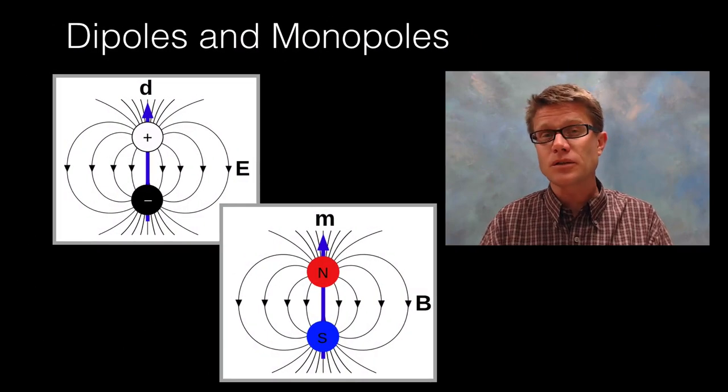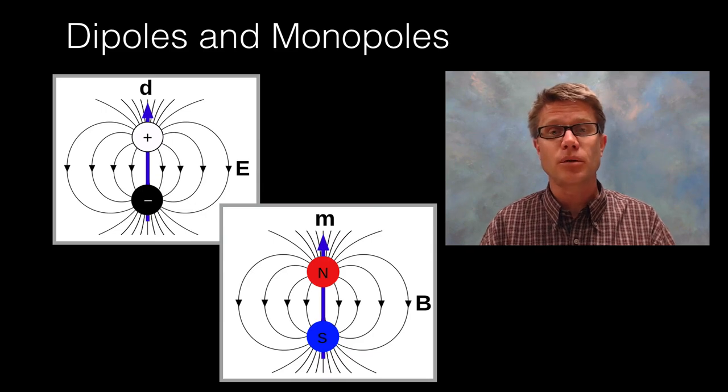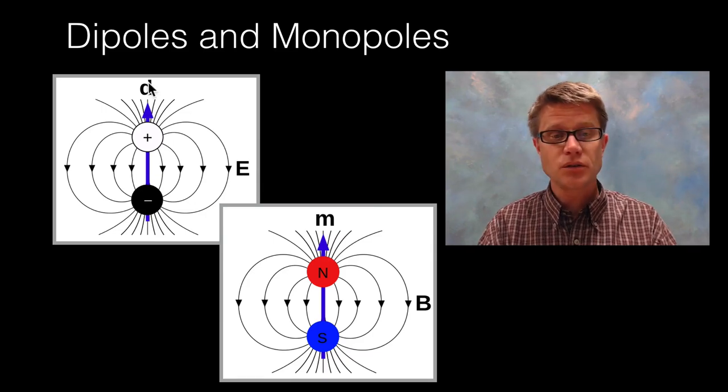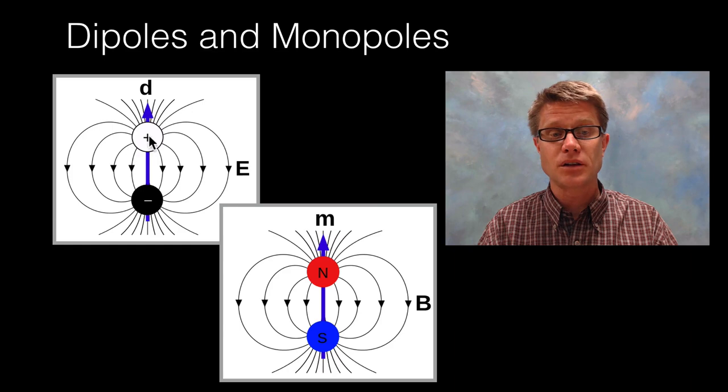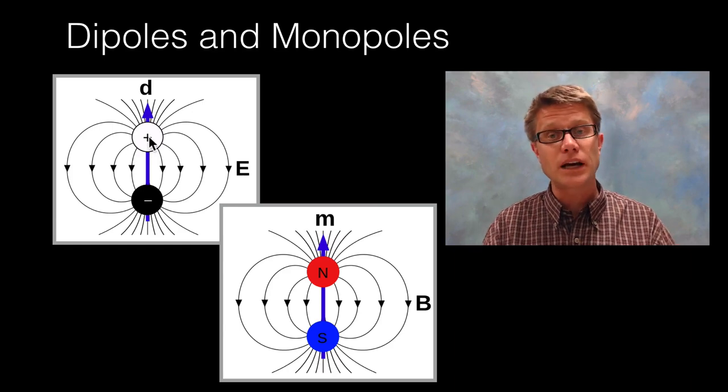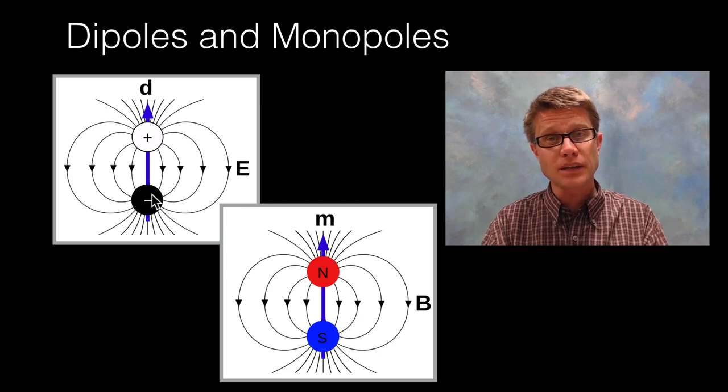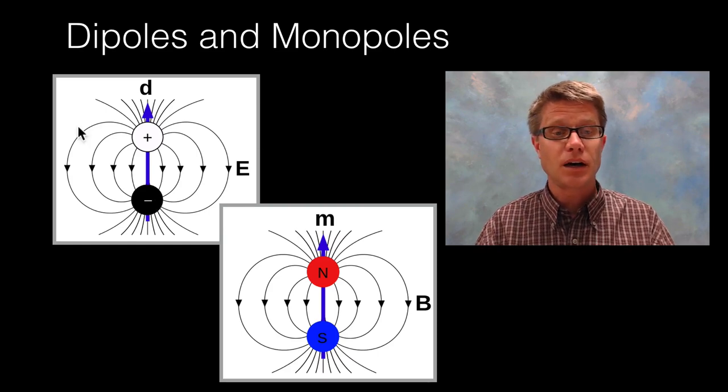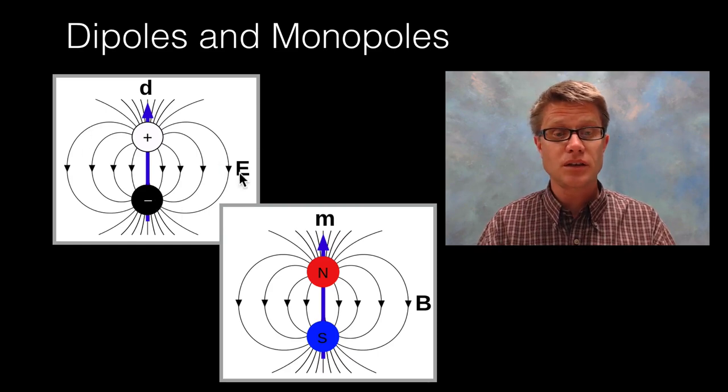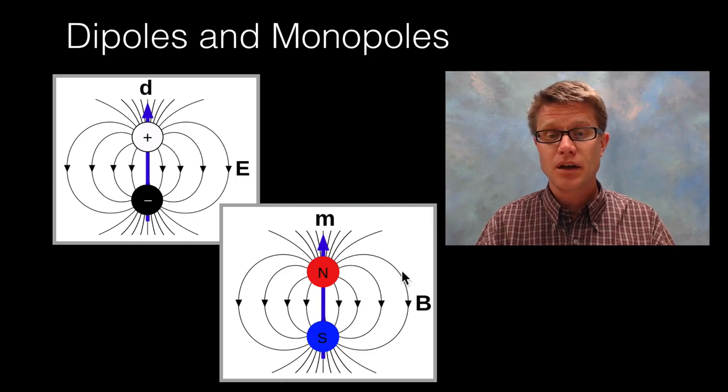And so the first thing I want to make sure I mention is the difference between the dipoles we've talked about so far. So this would be an electric dipole. We have a positive charge. Remember all the electric field lines would come out of it. And a negative charge, they'd all come into it. But if we move them next to each other, then we have this electric dipole. And you can see that those field lines, electric field lines, are identical to those of the magnetic field lines.